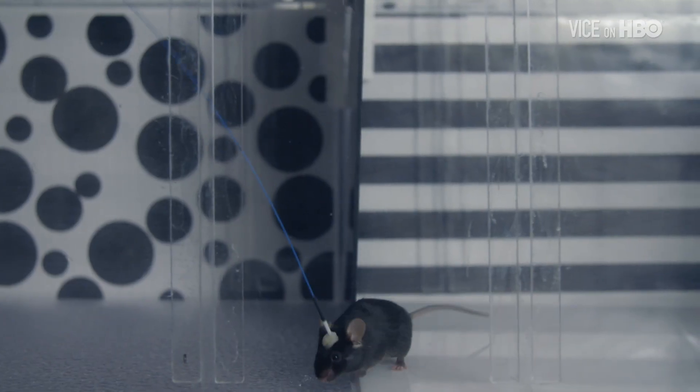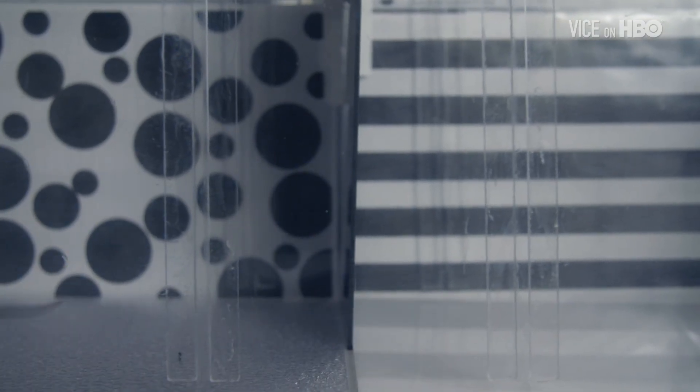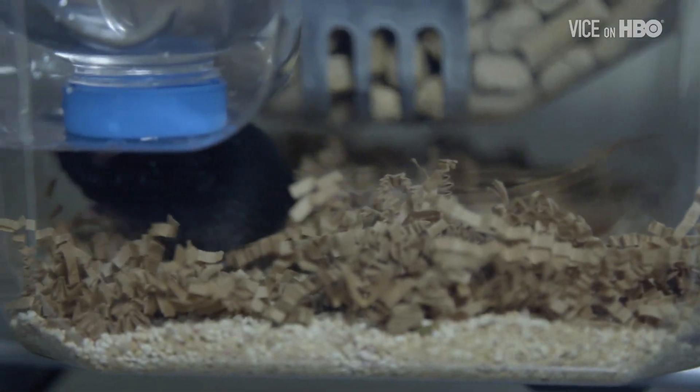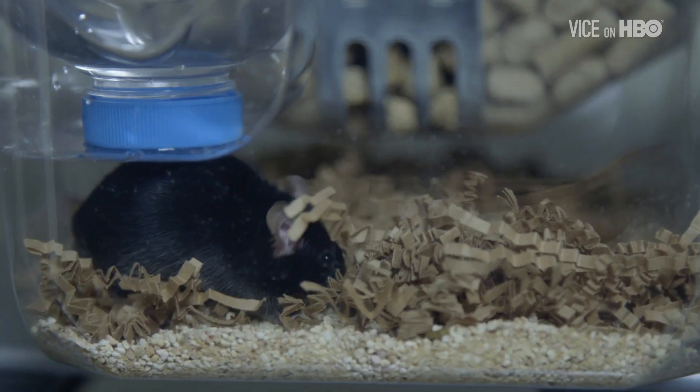Optogenetics lets us tease apart that level of complexity, too. We can say, this one input coming into these dopamine neurons, how does that affect their activity? What does the animal do when we turn on that input or turn off that input?